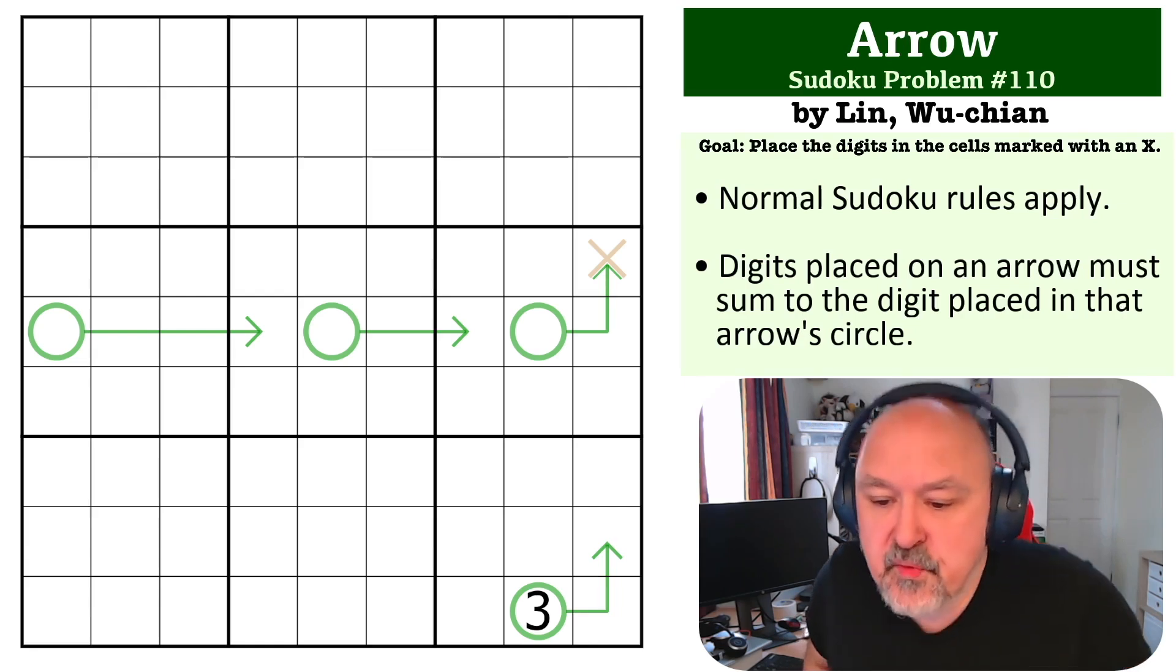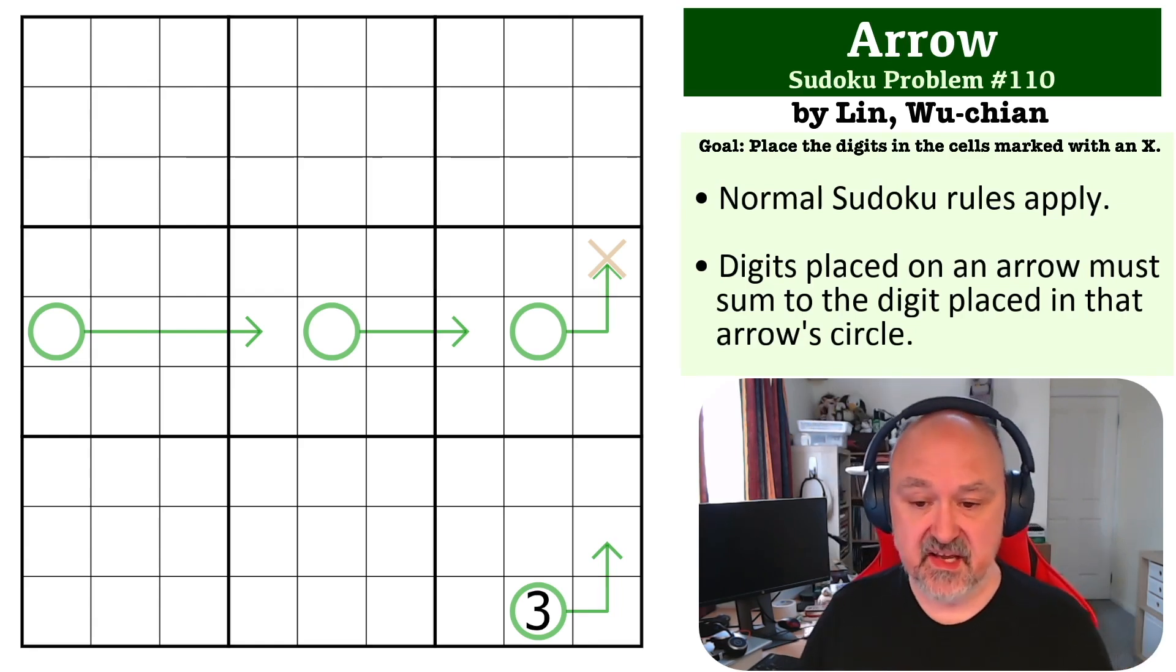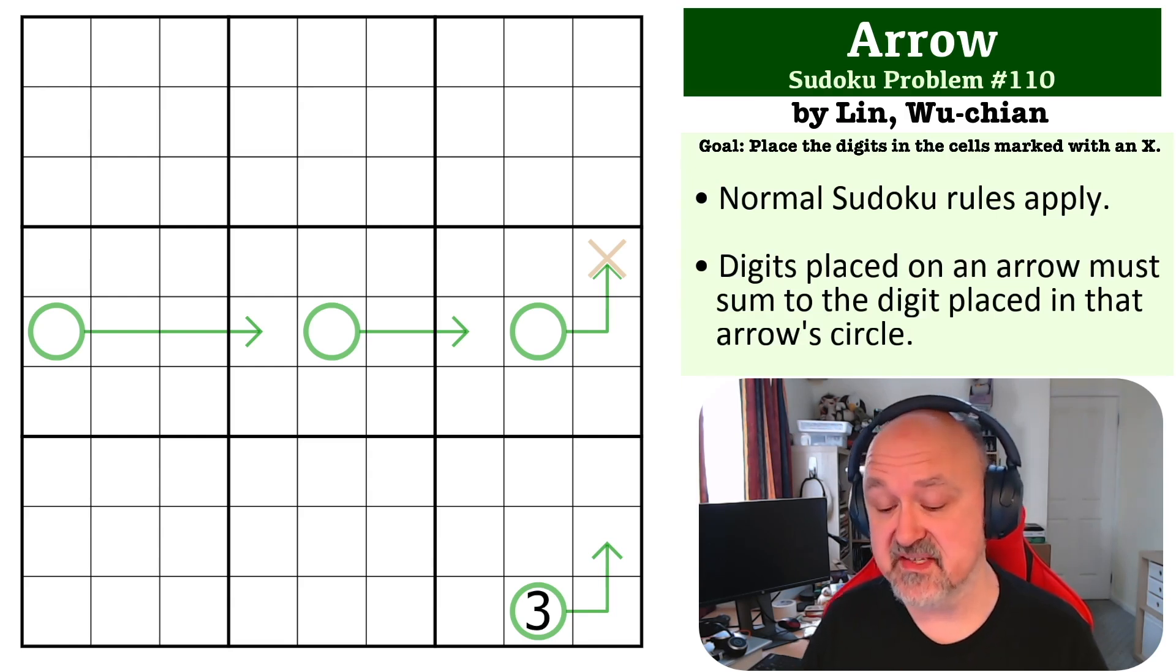Okay, so this one is basically using the concept that every row, column, and box of a Sudoku contains all of the digits from 1 to 9, and therefore if you add those together, they sum to 45. So we can look at this three arrow, and the only way to make three with Sudoku digits is with 1, 2.